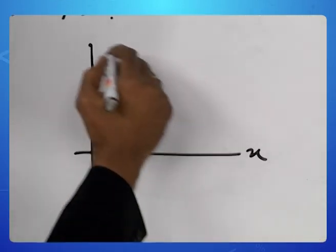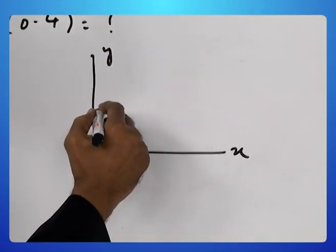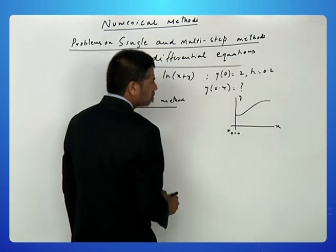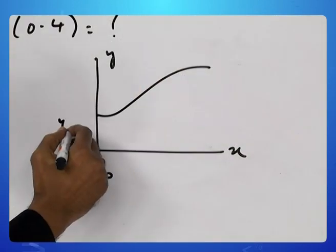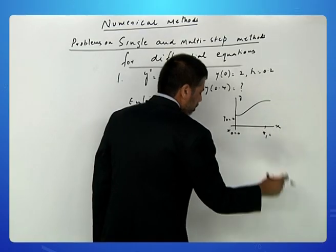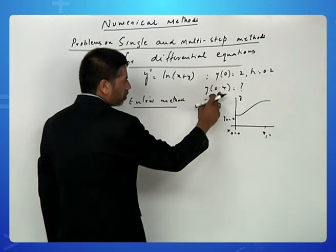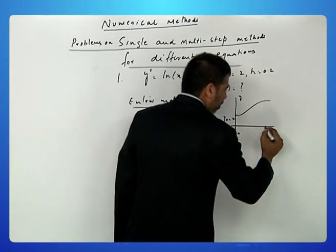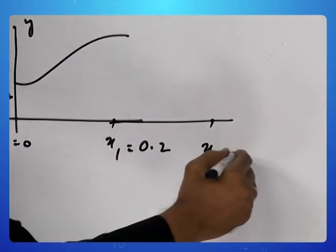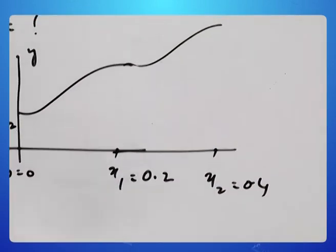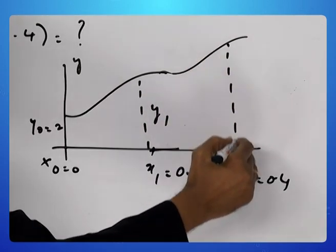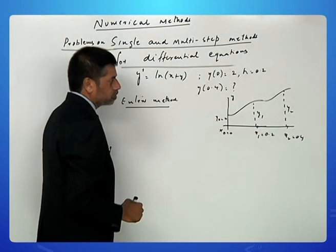Just for the sake of visualization, suppose this is the solution curve. This is x₀ = 0 and corresponding y₀ = 2. Because h is 0.2 and we want the solution at 0.4, we will have to do two estimations — one at 0.2 and finally at 0.4. So we need to calculate y₁ and y₂, where y₂ is finally the output.